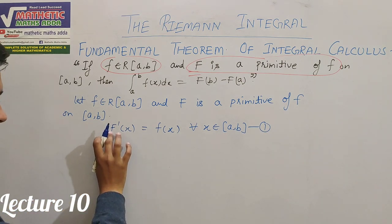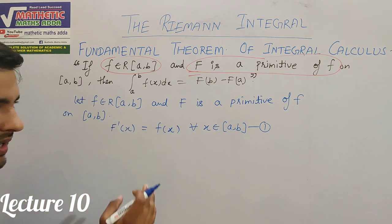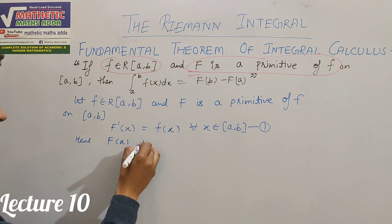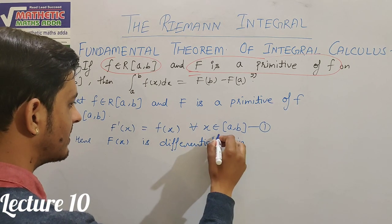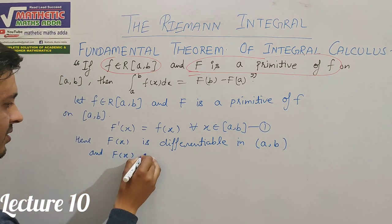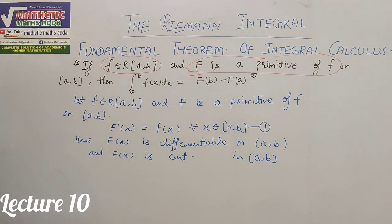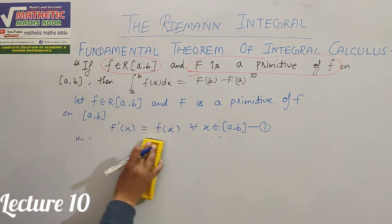Since the differentiation of capital F equals small f, capital F is differentiable, which means the function is differentiable. So F(x) is differentiable in the open interval as well. And if any function is differentiable, it will also be continuous on the closed interval [a, b]. So we can use the Lagrange Mean Value Theorem here. Before that, let me consider a partition. The function being differentiable is known because the primitive is given.